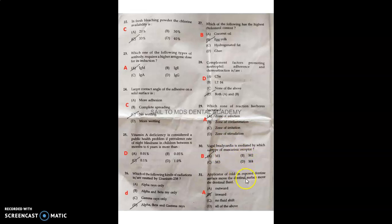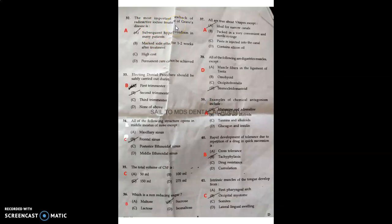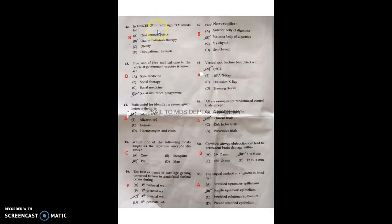Ventricular tachycardia is mediated by M2 subtype of muscarinic receptor. Application of cold on exposed dentin will make the fluid move outward. The most important drawback of radioactive iodine treatment for Graves disorder is subsequent hypothyroidism in many patients. Elective dental procedures can be carried out safely in second trimester of pregnancy. All structures open in middle meatus of the nose except posterior ethmoidal sinus. Total volume of CSF is 150 ml. The non-reducing sugar is sucrose. All are true about Vitapex except ideal for narrow canals. All are digastric muscles except sternocleidomastoid. Examples of chemical antagonism include histamine and adrenaline. Rapid development of tolerance due to repetition of drug in quick succession is tachyphylaxis. Intrinsic muscles of tongue develop from somites. In UNICEF GOBI campaign, O stands for oral rehydration therapy. Provision of providing free medical care to the people at government expense is known as social insurance program.